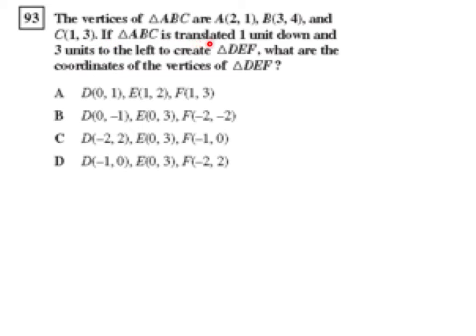If triangle ABC is translated one unit down and three units to the left to create triangle DEF, what are the coordinates of the vertices of DEF? So let's reinterpret that information. Translated one unit down would mean that's a Y coordinate transformation of negative 1. And three units to the left would be an X coordinate translation, and to the left would also be negative.